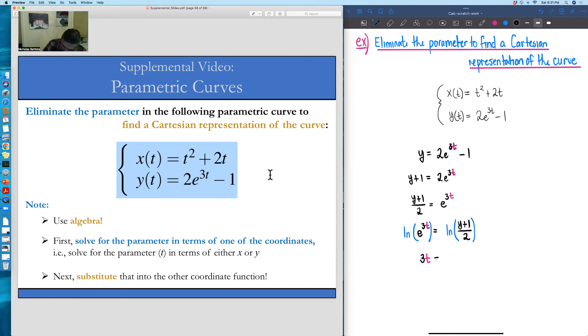The right-hand side, we still have that's ln of y plus 1 all over 2. And lastly, to get t by itself, just divide both sides by 3. So we have t is equal to 1 third ln of y plus 1 all over 2.